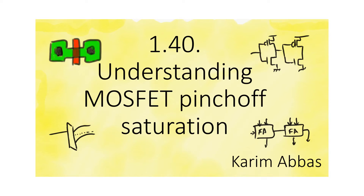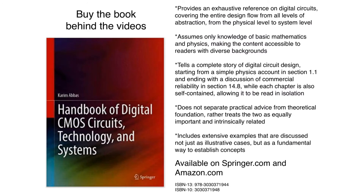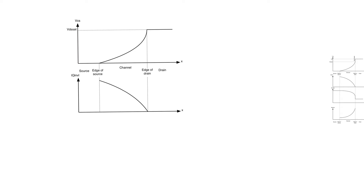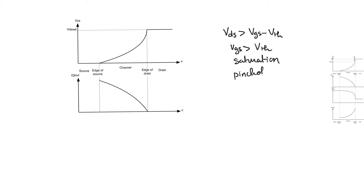It is a little bit challenging to understand why exactly current saturates above pinch-off in a MOSFET. We already concluded that when VDS is greater than VGS minus V_threshold, provided there was a channel to begin with (i.e., VGS is greater than V_threshold), the channel goes into saturation. Saturation happens because we pinch off the channel at the drain end, leading to the disappearance of charges at the drain end, causing current to saturate at the last level seen in the ohmic regime.